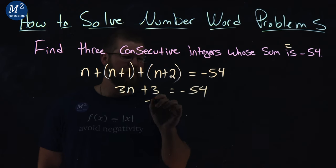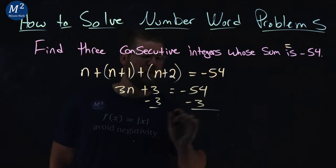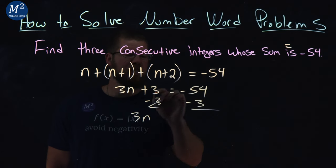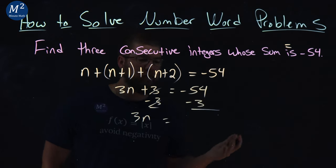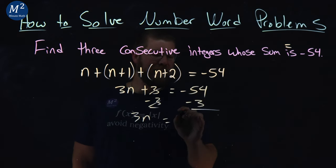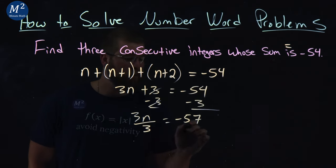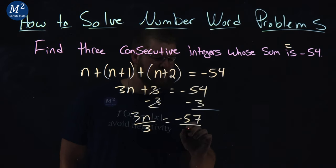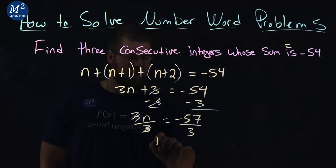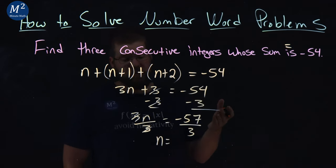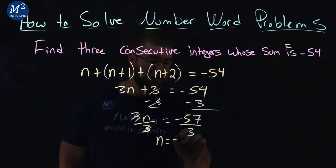We're solving for n here. Subtract three from both sides. We have 3n - these cancel here. Negative 54 minus 3 is negative 57. Now divide both sides by 3 - opposite of multiplication is division. The 3s cancel, leaving n by itself. Negative 57 divided by 3 is negative 19.